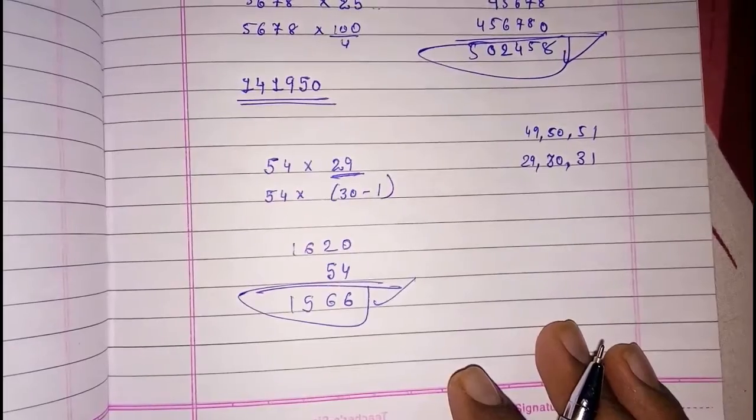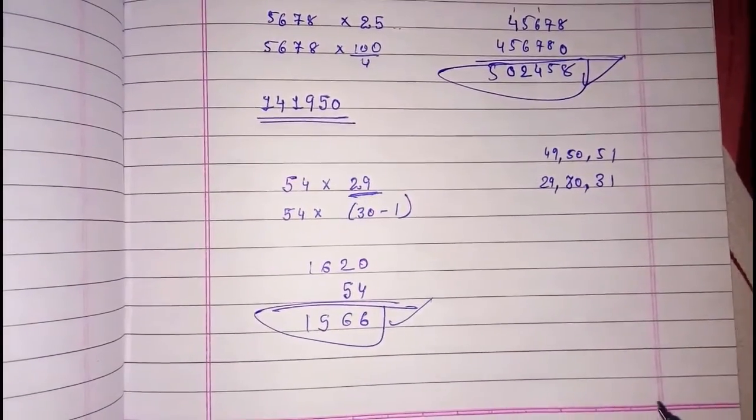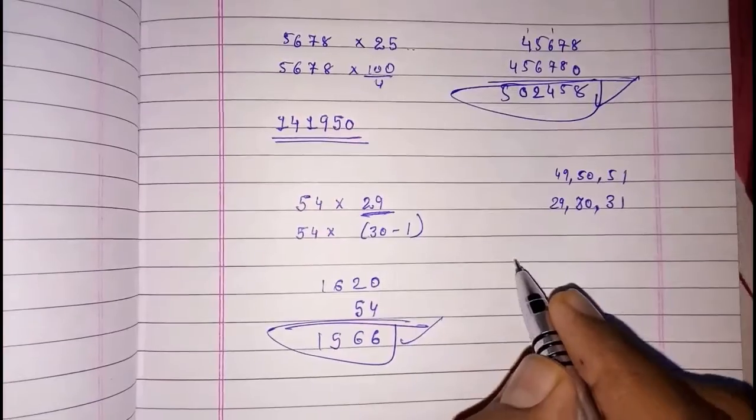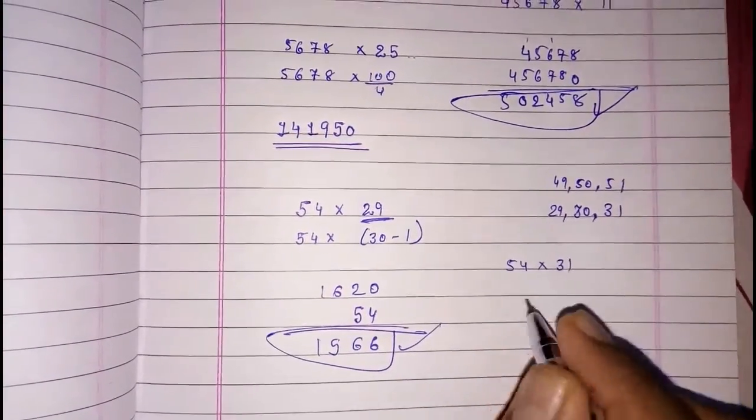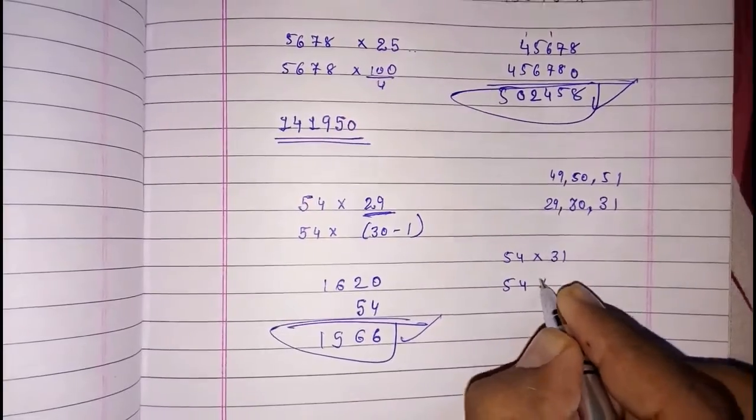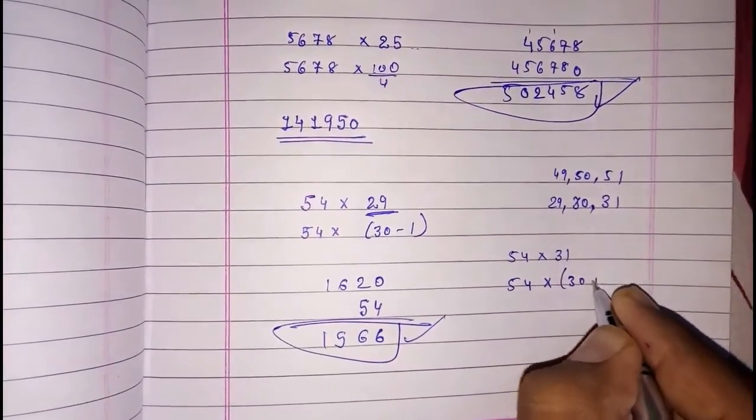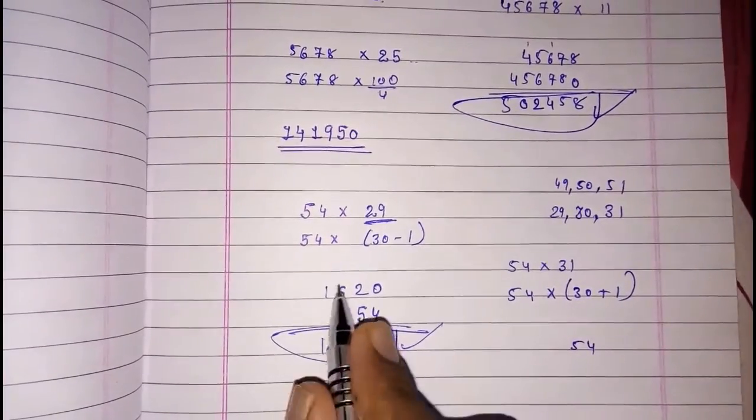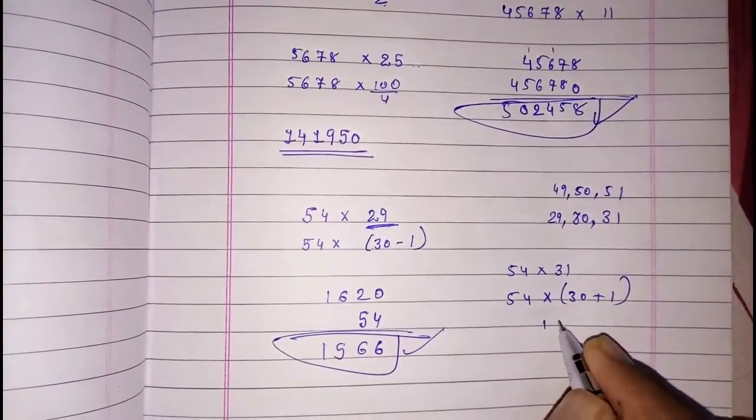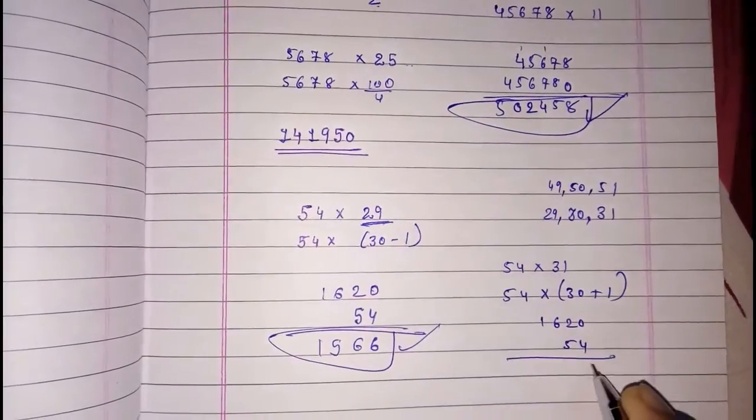Now I'm going to show you if 31 is there, you can use like that. 54 into 31, you can do like this: 54 into 30 plus 1. You know 54 ones are 54. Here only we had done 54 into 30, 1566. Now we have to add.